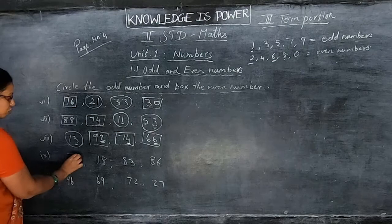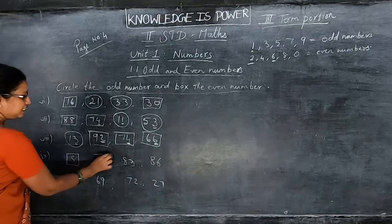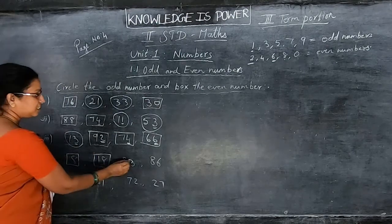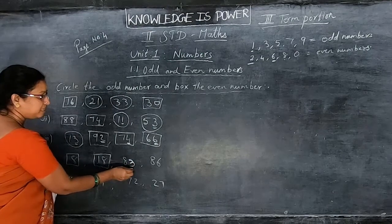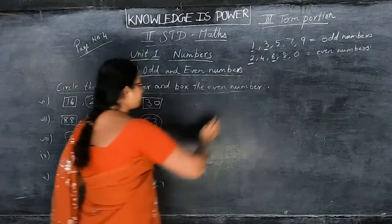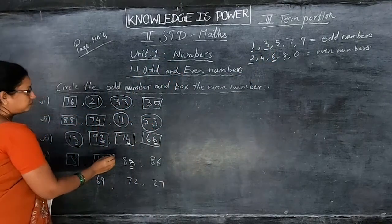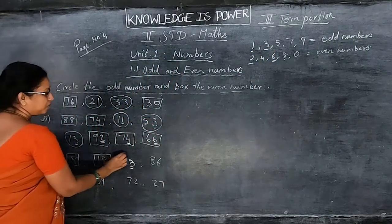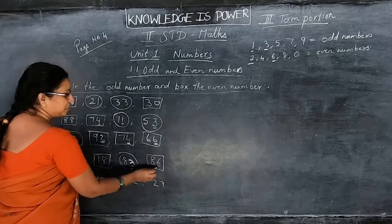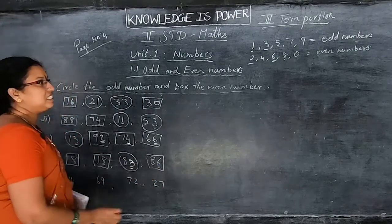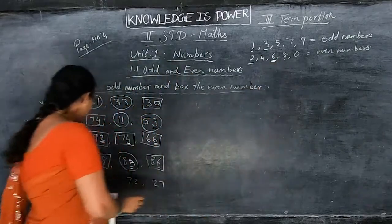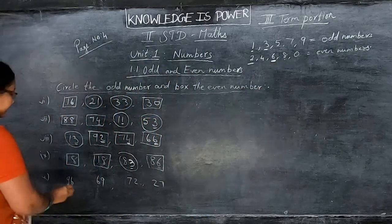8 is also an even number. 18 is also an even number. 83: in 1's place, 3 is there — 3 is in the odd numbers, so this is an odd number. You circle the odd number. Then 86 is an even number.